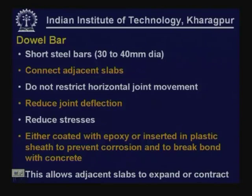Dowel bars are meant to reduce joint deflection and as a result reduce the overall stresses in the slab. These are either coated by epoxy or inserted in a plastic sheath to prevent corrosion and also to break bond between the bar and the concrete. This breaking of bond allows adjacent slabs to either expand or contract independently of the movement of the slab in which the dowel bars are inserted.